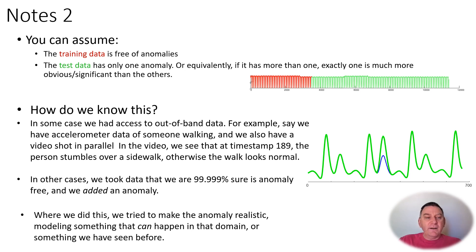As we mentioned earlier, you can assume the training data is completely free of anomalies and the test data has exactly one anomaly, or equivalently, there might be multiple anomalies but one that is much stronger or more significant than the others, and that is the anomaly you should predict.